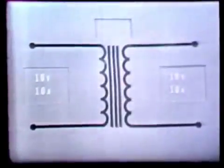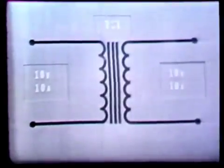If the secondary of a transformer has more turns than the primary, the voltage is stepped up. Whereas if the secondary has fewer turns, the voltage is stepped down. Later, you'll see transformers in which the primary and secondary have the same number of turns. Such a transformer has a turns ratio of 1 to 1. Unlike the step-up and step-down transformer, a 1-to-1 transformer neither increases nor decreases voltage. The voltage and current available at its secondary is the same value as that applied to its primary.